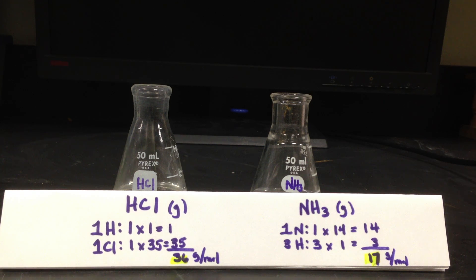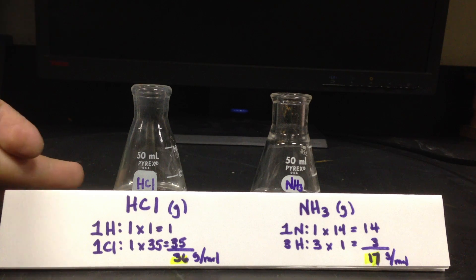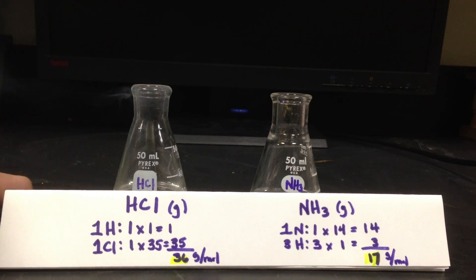Alright, so smoke isn't so apparent, but you saw initially it may have come from this one. Let's put these flasks a little closer together. There you go. I didn't touch it. You see the white smoke, the ammonium chloride, definitely coming from the hydrochloric acid. Now it needs the ammonia gas.